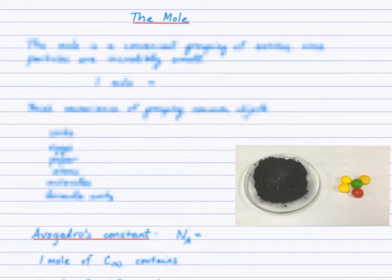One of the central concepts to chemical calculations is the concept of the mole. And no, I'm not referring to the furry brown animal, I'm referring to the way that we as chemists group particles or entities. I've written here that the mole is a convenient grouping of entities, since particles themselves are so incredibly small.